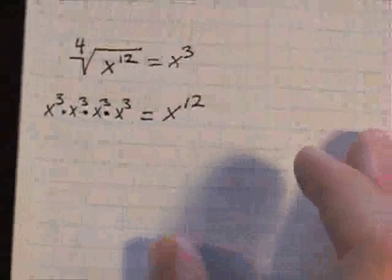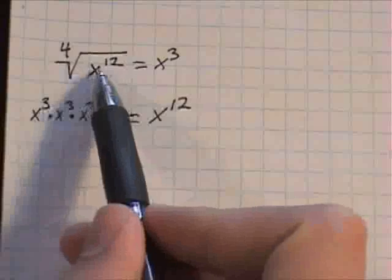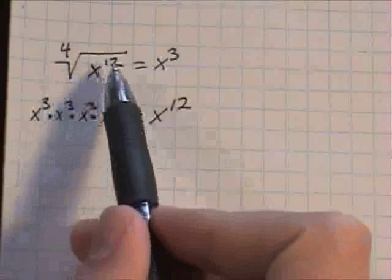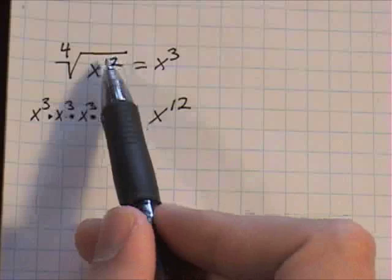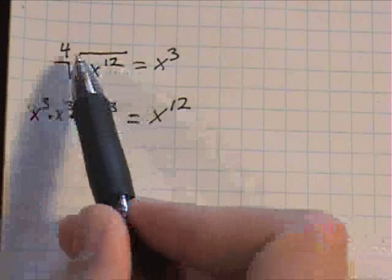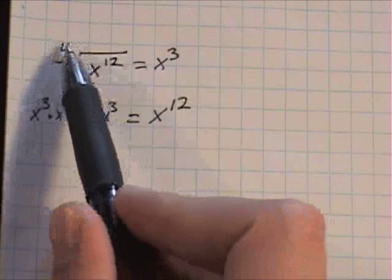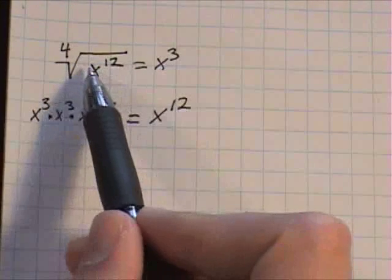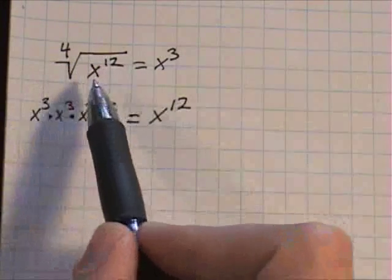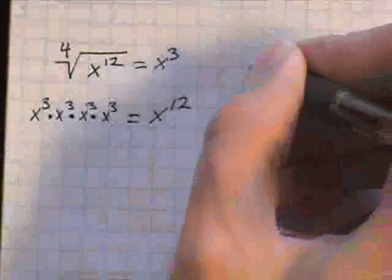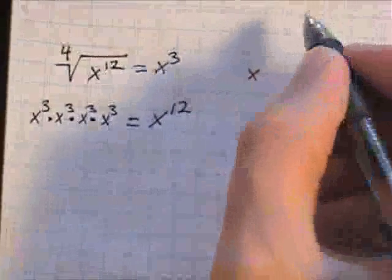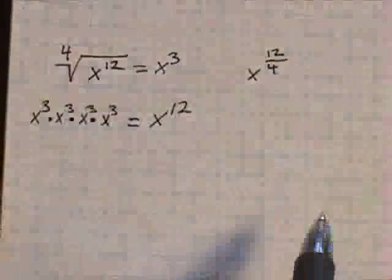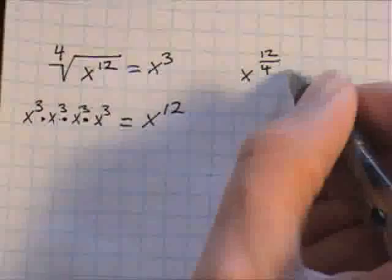There's another little trick when you have exponents raised to a certain power. And that is if you simply take this exponent up here and you divide it by the index number, that will become your new exponent for this base. So that means you should have x twelve divided by four.